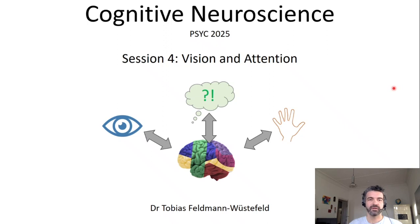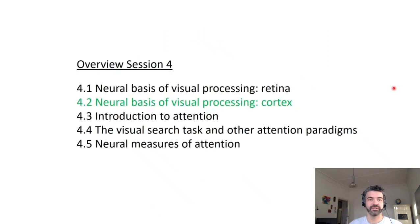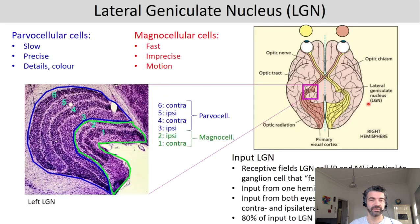This is the second part of today's session on vision and attention. After we've talked about the neural basis of visual processing in the retina, we will now move on and see how that information is further processed in cortical areas.